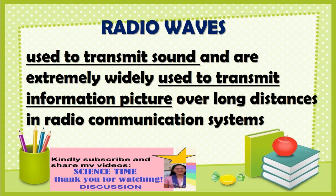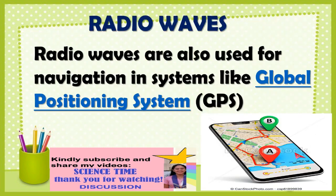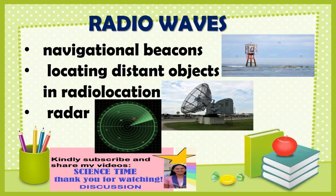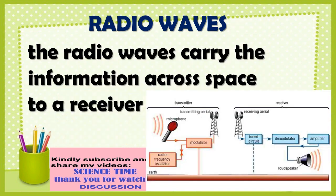Radio waves are used to transmit sound and are extremely widely used to transmit information and pictures over long distances in radio communication systems such as radio broadcasting, television, two-way radios, mobile phones, communication satellites, and wireless networking. Radio waves are also used for navigation in systems like GPS and navigational beacons, and for locating distant objects in radio location and radar.